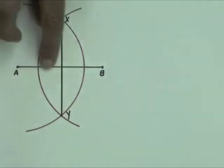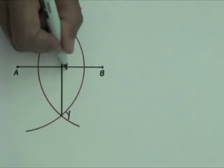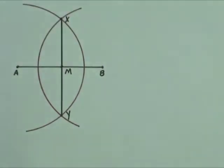XY meets AB at M, the midpoint of AB. To understand why this is true, draw line segments AX, AY, BX, and BY.